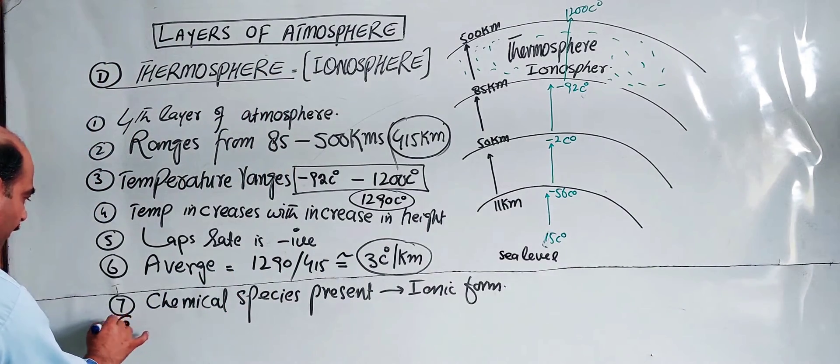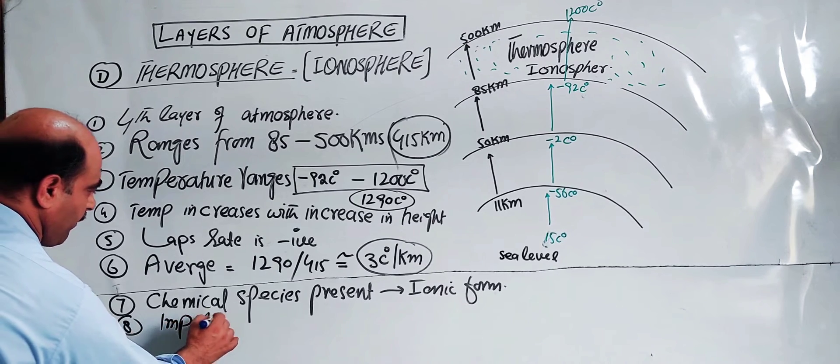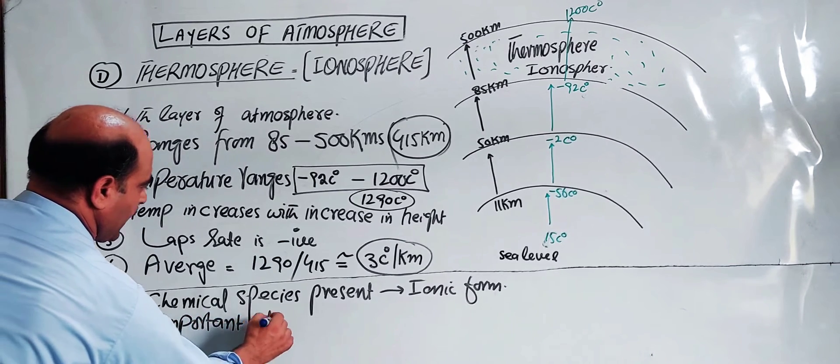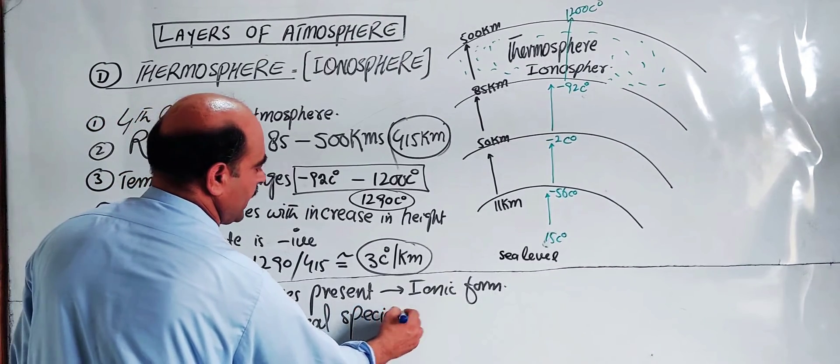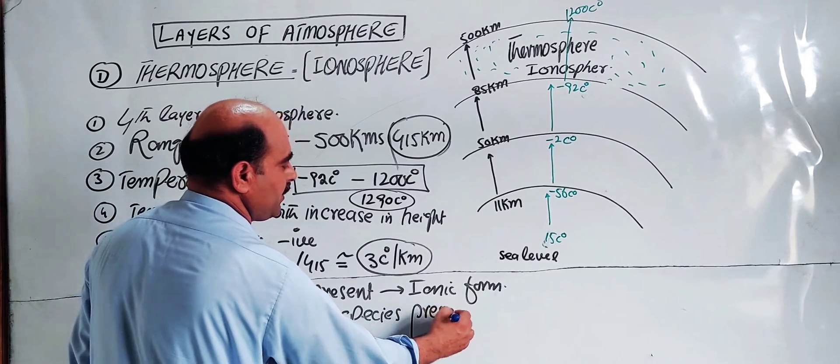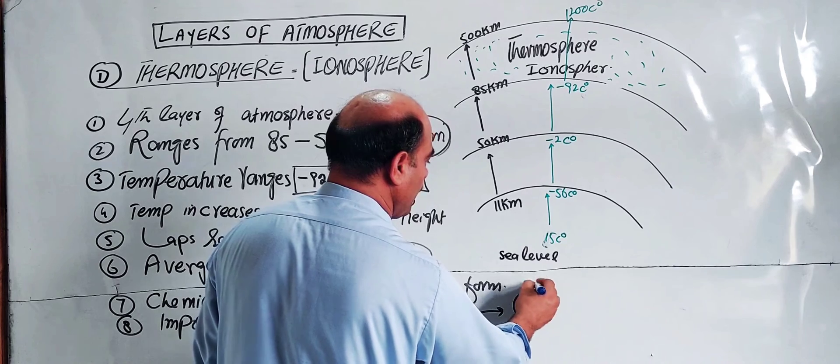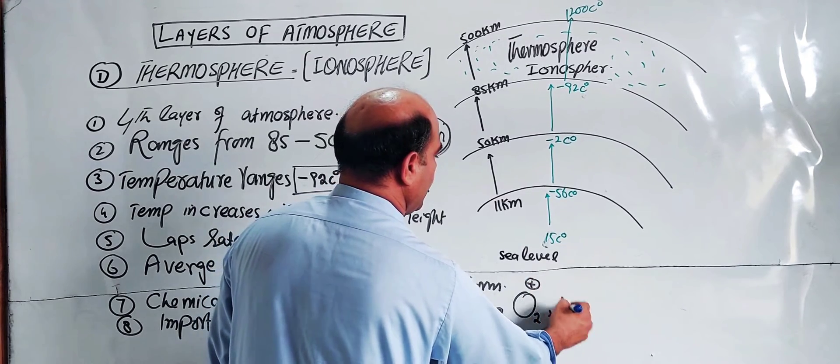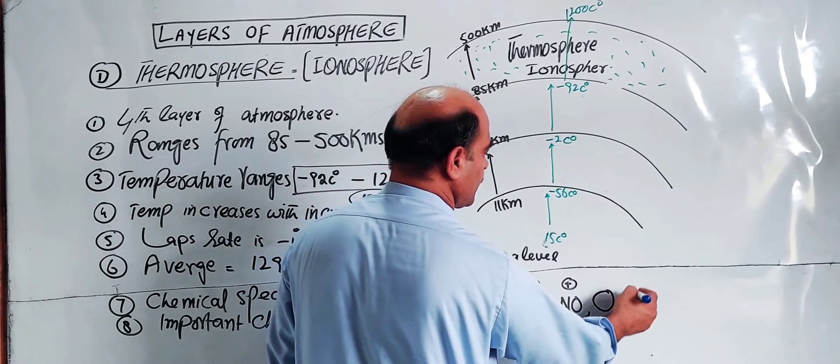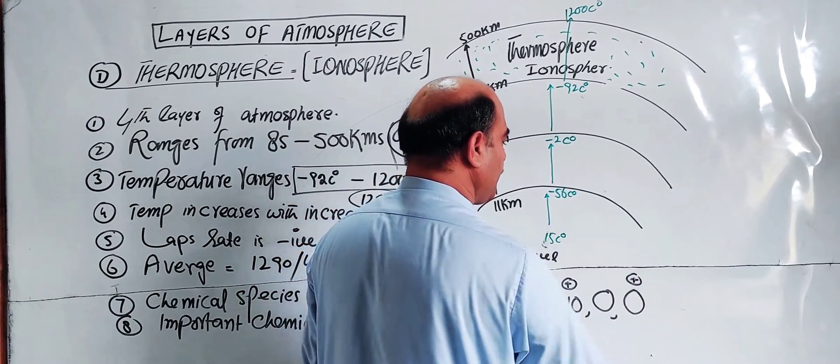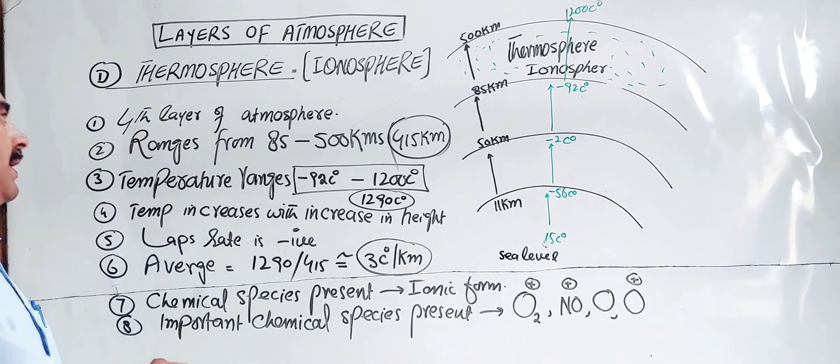Important chemical species present include: O2 in ionic state, nitric oxide (NO) in ionic state, atomic oxygen, and atomic oxygen in ionic form.